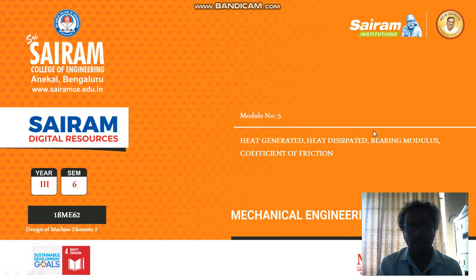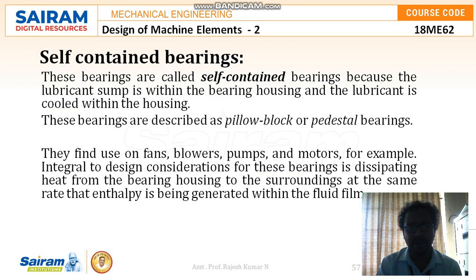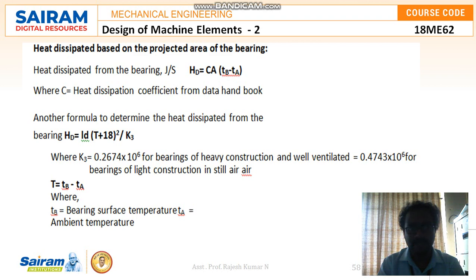Already in the previous video we discussed some concepts of heat dissipated. Just for continuation I will repeat the same thing. The heat dissipated based on the projected area of the bearing — the formula can be written as HD = CA(TB − TA), where C is the heat dissipation quotient taken from the data handbook. We have another formula: HD = l × d × T + 18² / K3.